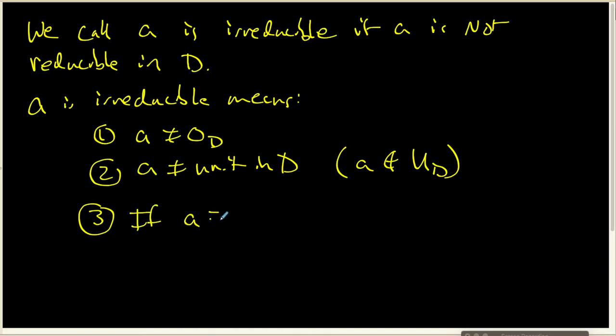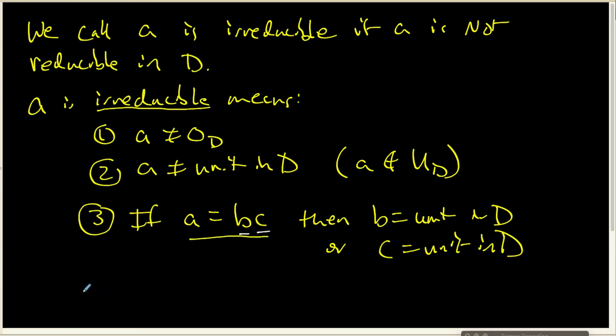And the third thing is that if we have a written as b times c, then one of b and c has to not be not a unit. And because a is not equal to 0, they can't be equal to 0. Well, not not a unit means they are a unit. So this third property is that if a is written as a product, then either b is equal to a unit in D or c is equal to a unit in D. In other words, when we say that a is irreducible and we have a written as a product, that says either b is inside my set of units or c is inside my set of units.